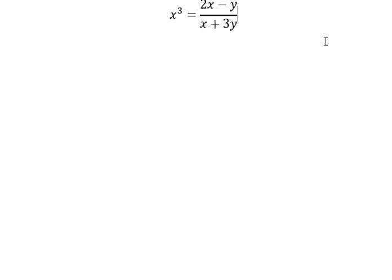So now I want to show you how to answer. We multiply both sides by x plus 3y. So we have x to the power of 3 multiplied by x plus 3y equal to 2x minus y.